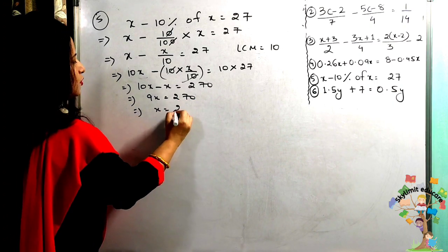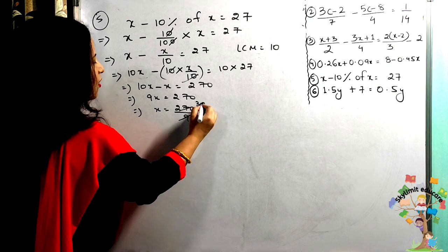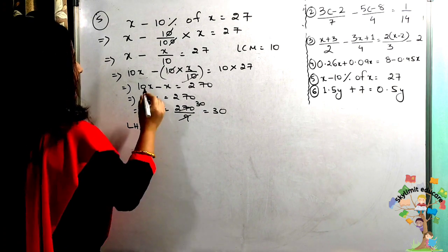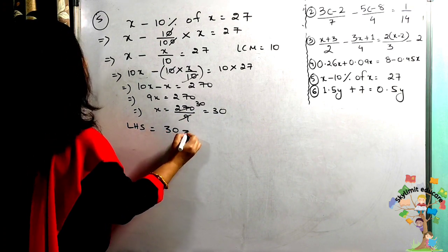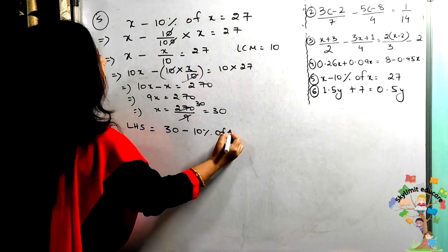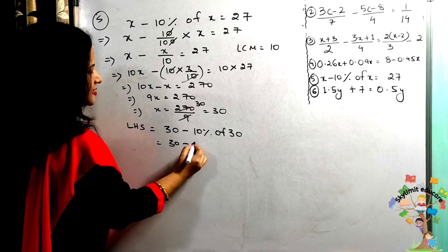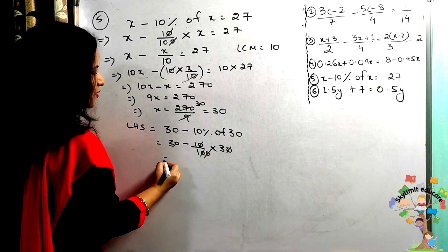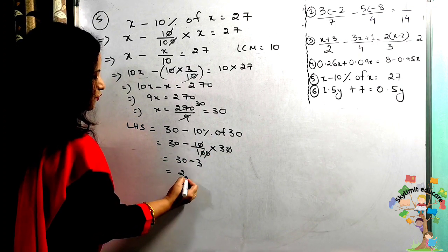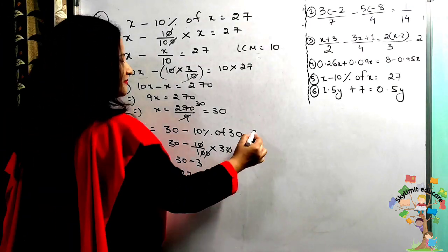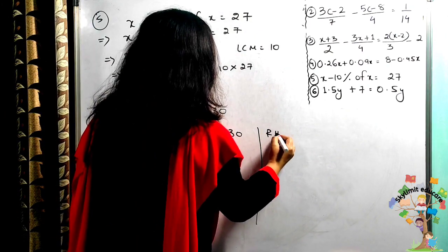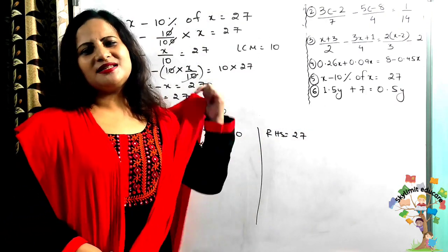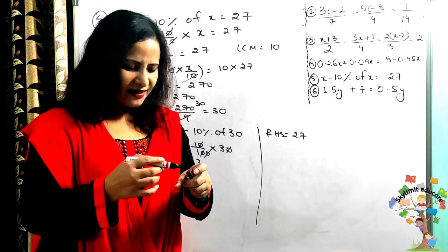x = 270 ÷ 9 = 30. Verifying: 30 − 10% of 30 = 30 − (10/100) × 30 = 30 − 3 = 27. Right hand side is also 27. Both sides are equal — verified.